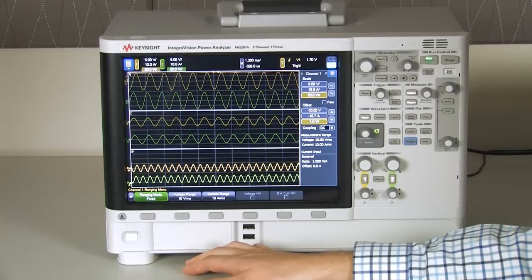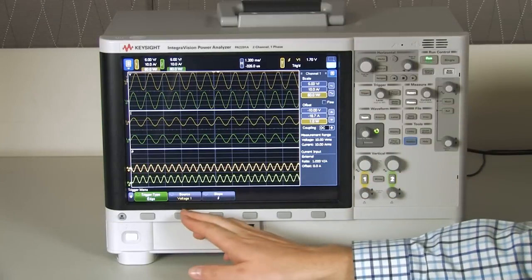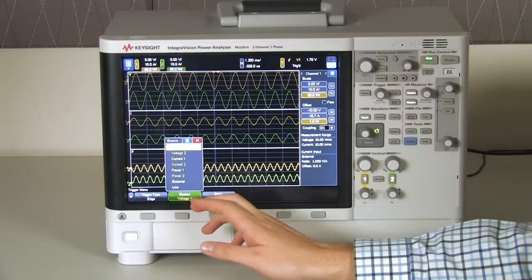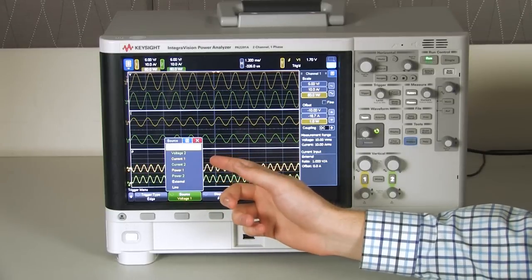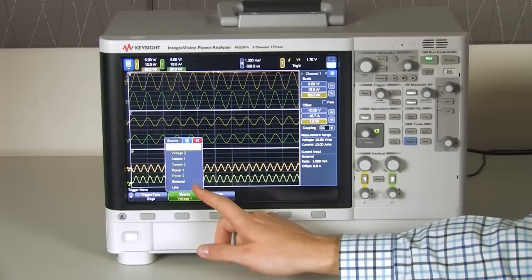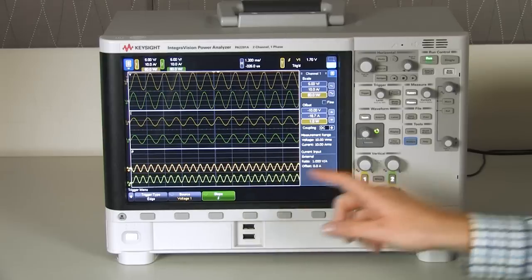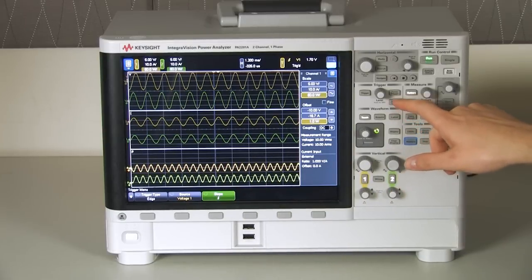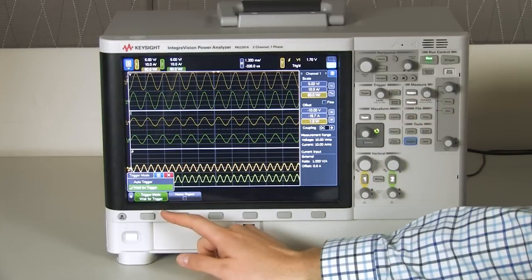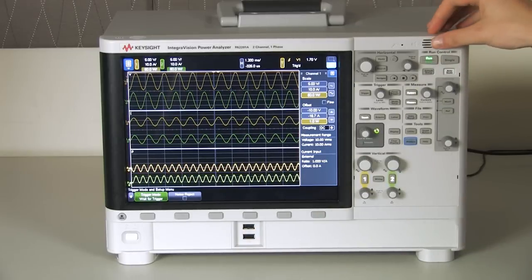So, Blake, now can you show us the triggering? Yes. So, the triggering menu, we can select what source we want to trigger from. It can be any of the voltage, current, or power signals, external trigger, or line trigger. And for the edge, it can be either rising, falling, or either. We can also change the trigger mode to be either auto trigger or wait for trigger. In addition to this, we have our normal single trigger mode that you can switch to as well.